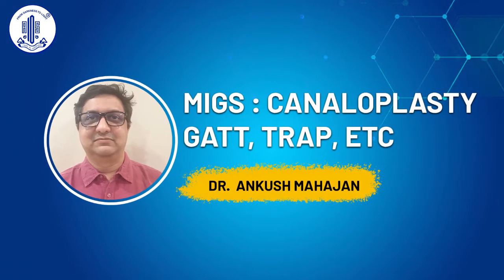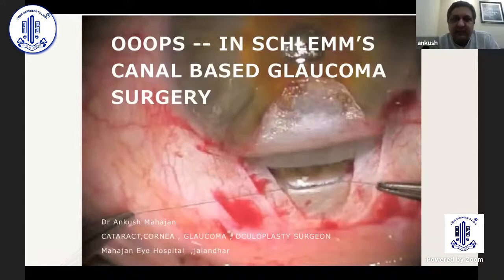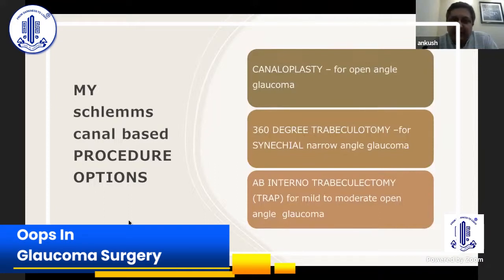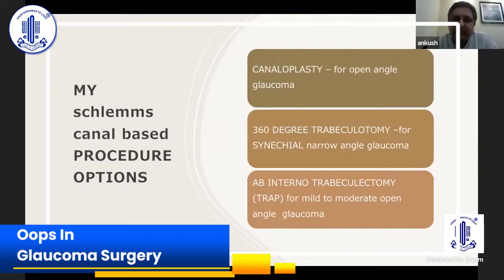I'll be speaking on my experiences with good-in-Schlemm's canal-based glaucoma surgeries. I do three kinds of surgeries in my setup: canaloplasty for open angle glaucoma, 360-degree trabeculotomy both ab interno and ab externo for congenital narrow angle glaucoma, and ab interno trabeculectomy which I call TRAP for mild to moderate open angle glaucoma. I'll be speaking on complications which can happen in these.